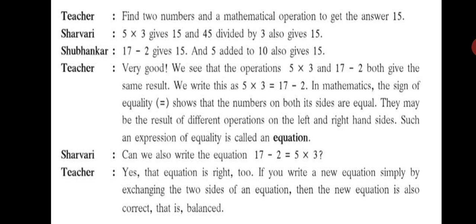Very good. We see that the operations 5 into 3 and 17 minus 2 both give the same result, that is 15. We write this as 5 × 3 = 17 - 2. In Mathematics, the sign of equality shows that the numbers on both its sides are equal. They may be the result of different operations on the left and right hand sides. Such an expression of equality is called an equation.